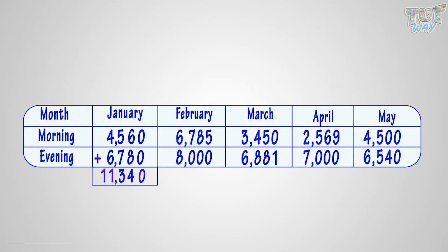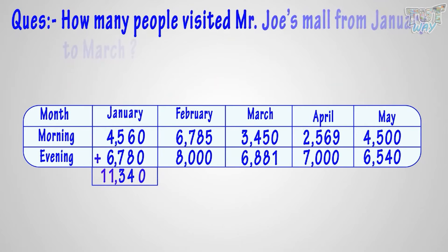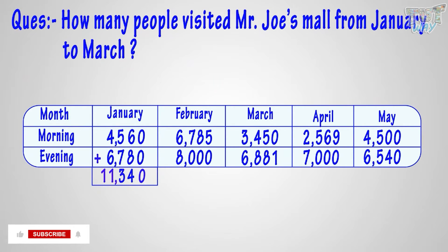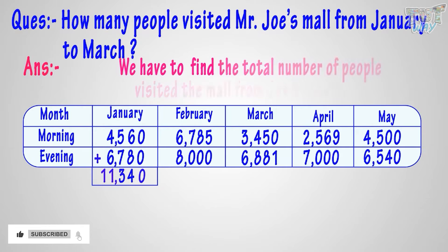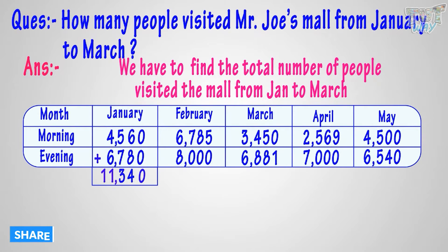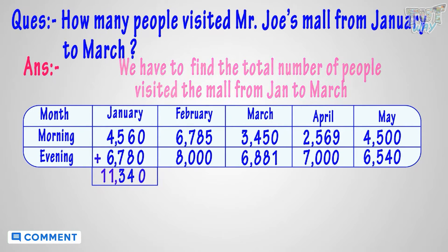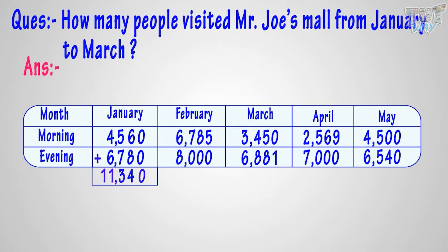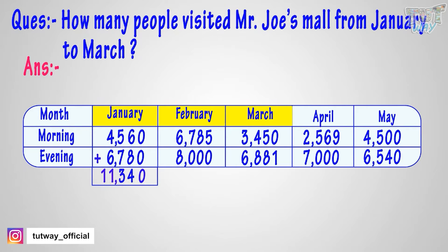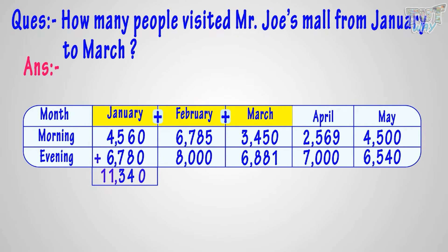Now let's answer another question. How many people visited Mr. Joe's mall from January to March? Here we have to find the total number of people who visited the mall from January to March. First we will calculate the number of people who visited the mall in each month — January, February, and March — and then add them up. People visited the mall in January — we already calculated it in our previous question. It's eleven thousand three hundred and forty people.